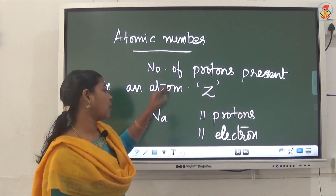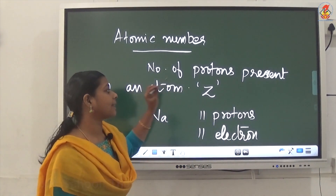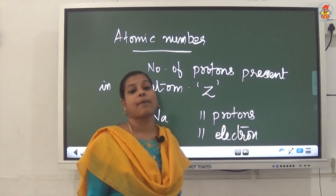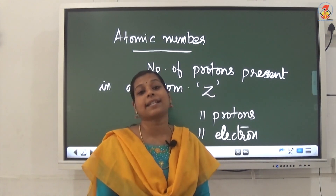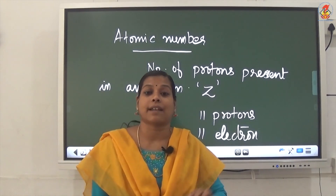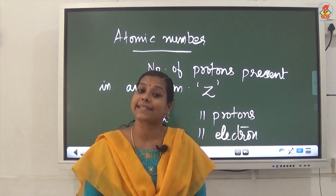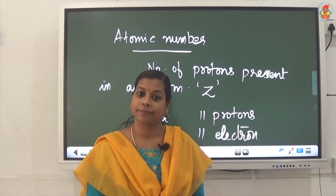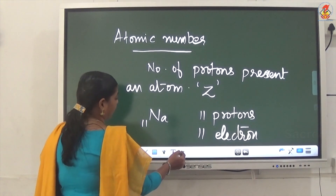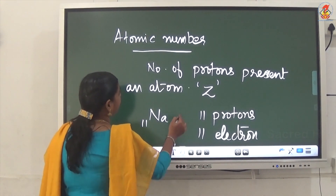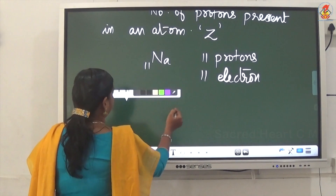So we can say that atomic number is either the number of protons or the number of electrons present in an atom, and it is represented by the letter Z. Now we can see the next term, that is mass number.